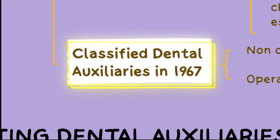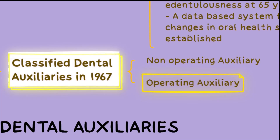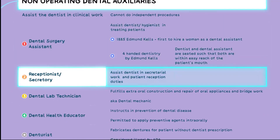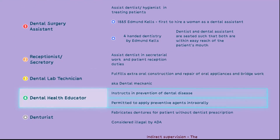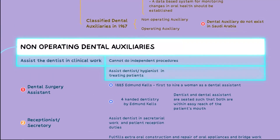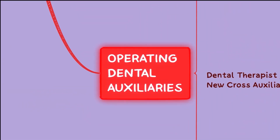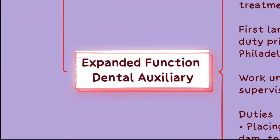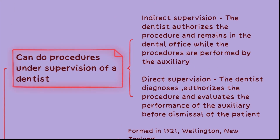WHO classified dental auxiliaries into two categories: non-operating and operating. Non-operating dental auxiliaries such as dental surgery assistants, receptionists, secretaries, dental lab technicians, dental health educators, and denturists assist dentists in clinical work but cannot perform independent procedures. Operating dental auxiliaries like dental nurses, dental therapists, dental hygienists, and expanded function dental auxiliaries can perform procedures under the supervision of a dentist.